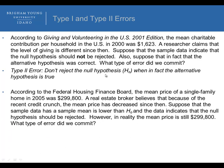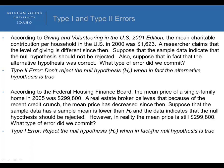In the housing price example, suppose the sample data indicated that the null hypothesis should be rejected, but in reality the mean price is still $299,800. In this case, a type 1 error was committed — we rejected the null when in fact the null was true.